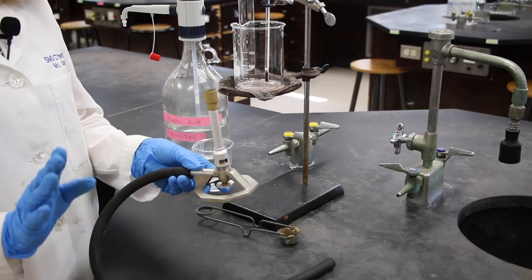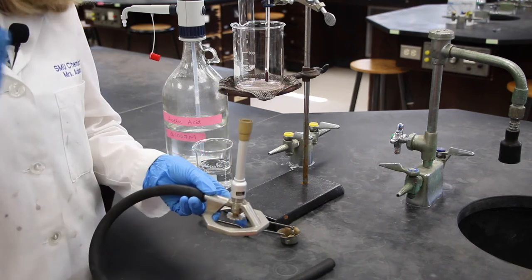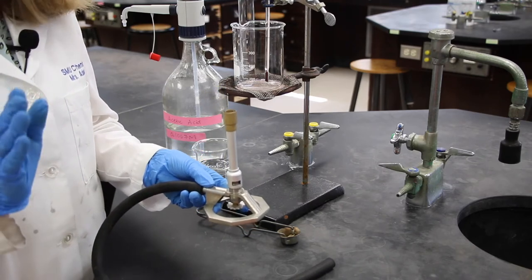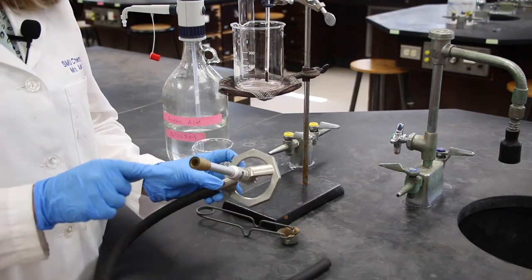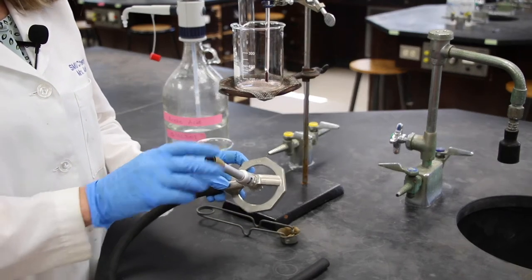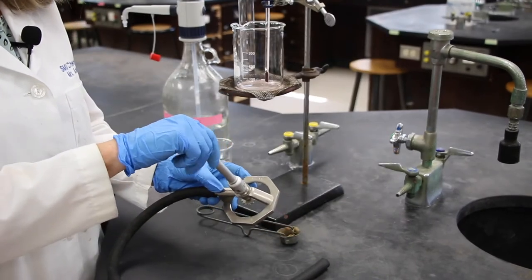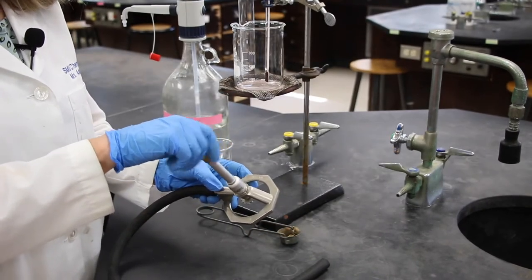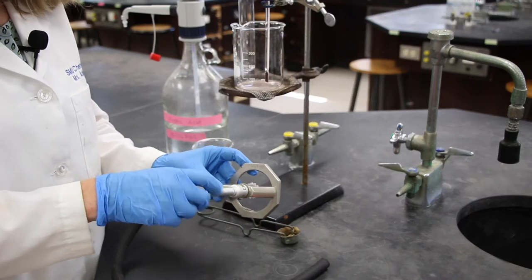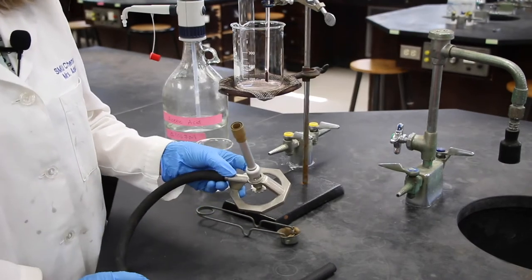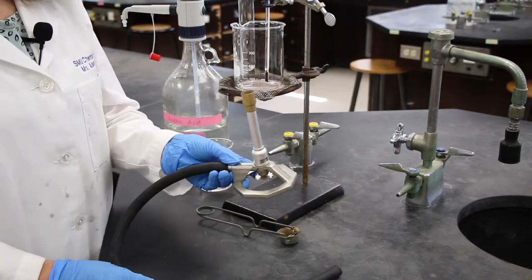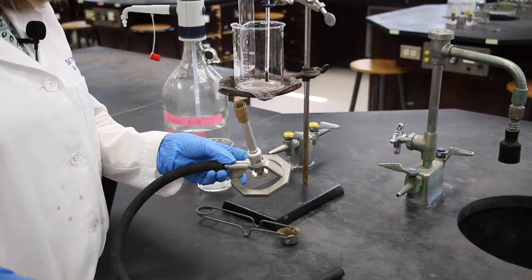The first thing we're going to do before we even start to light it is we want to turn everything off first. The easiest one is the air, and if you'll look down on the Bunsen burner, we're going to turn that clockwise. Righty-tighty, lefty-loosey.